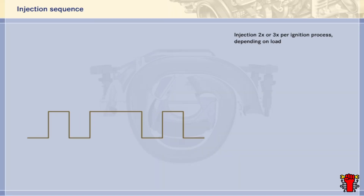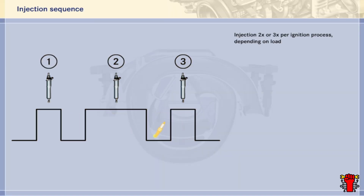Depending on load, there are either two or three injection processes per ignition cycle in stratified charge mode. Pilot injection and main injection occur before ignition, while the optional post injection process occurs after ignition if required. The previously mentioned piezo injectors are required in order to achieve these very short injection durations.